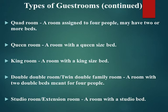Quad room: a room assigned to four people, may have two or more beds. Queen room: a room with a queen size bed. King room: a room with a king size bed. Double double room, twin double family room: a room with two double beds meant for four people. Studio room, extension room: a room with a studio bed.